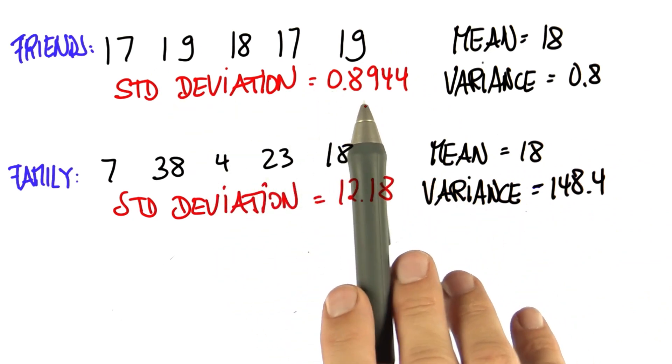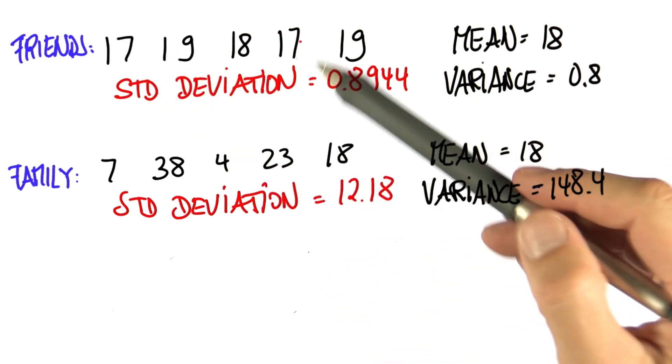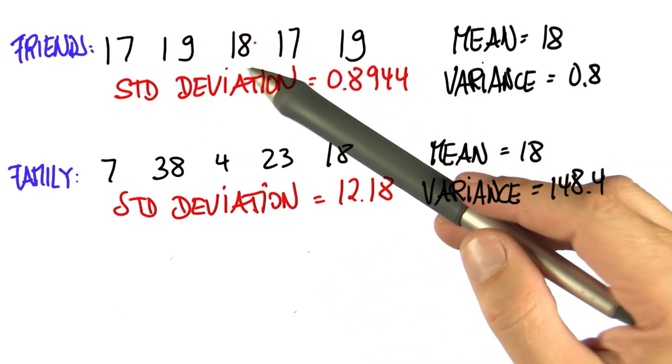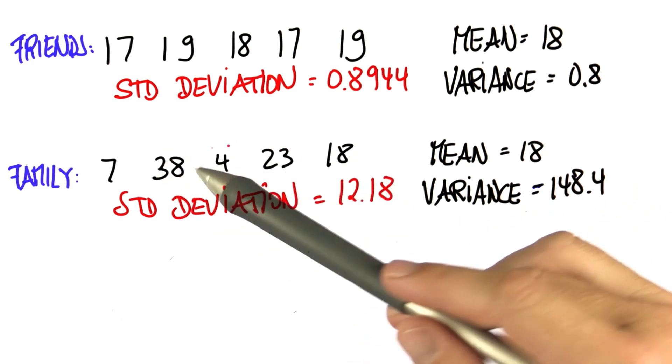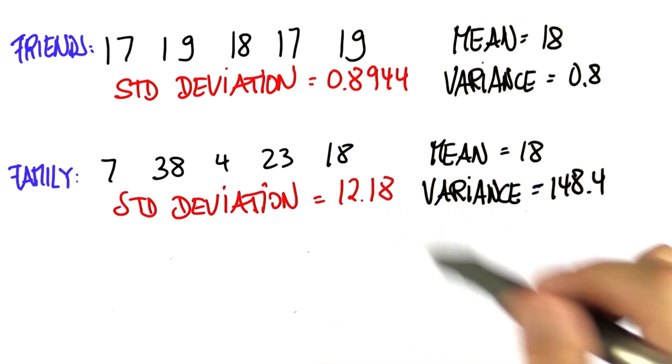And you can see why that is a good approximation. Here, four of the five kids differ in age by one year, whereas here people differ as much as 20 years in age from the mean. So the variance and the standard deviation are much larger.